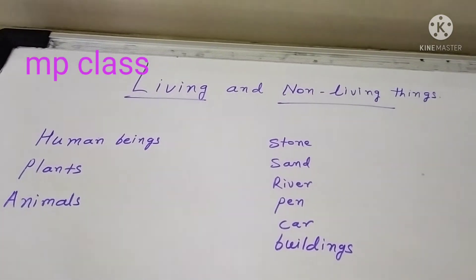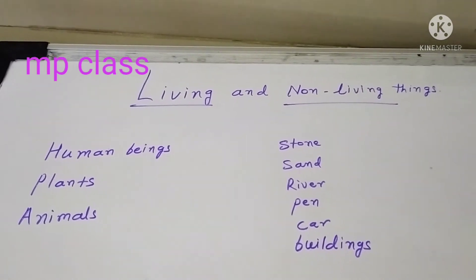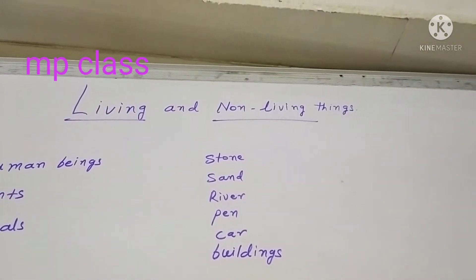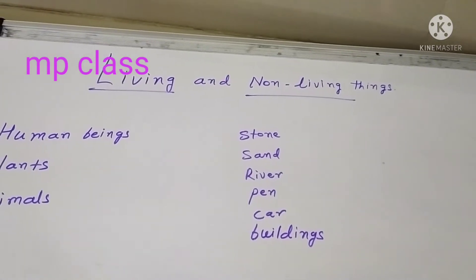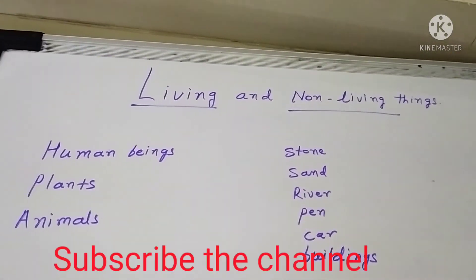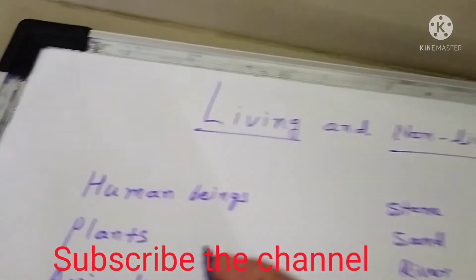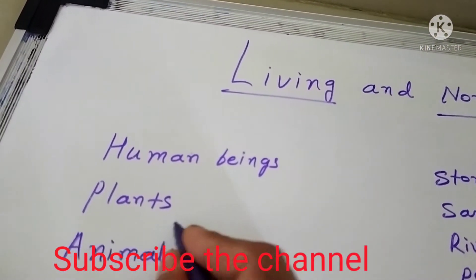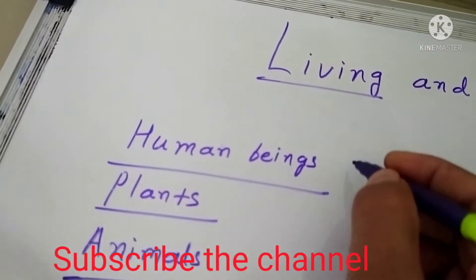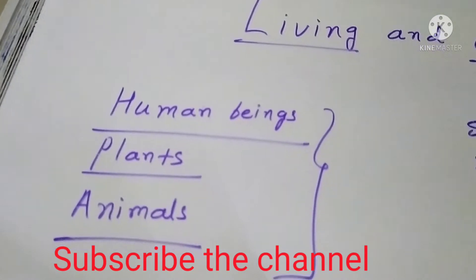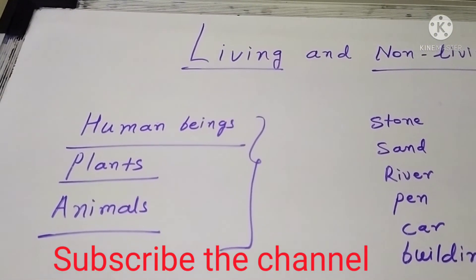Now, which are the living things we see here? Living things means they have a life — they grow up. Human beings, plants, and animals are the living things, because they grow.